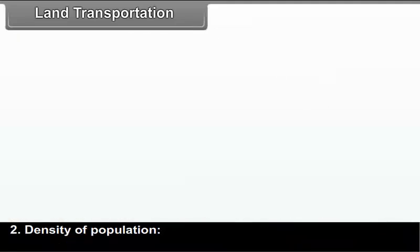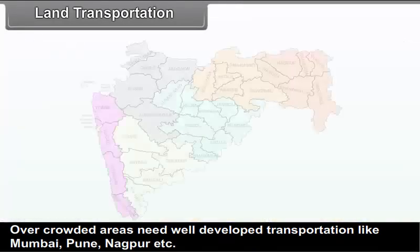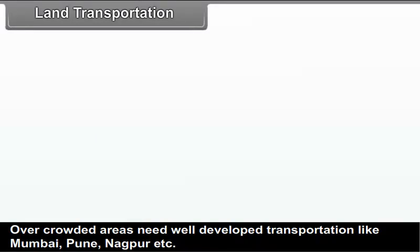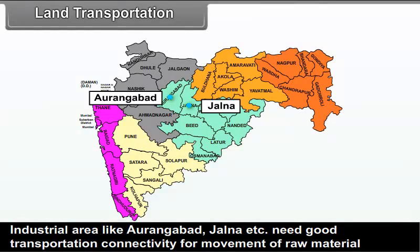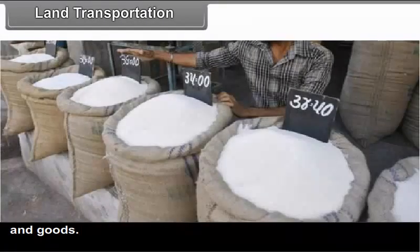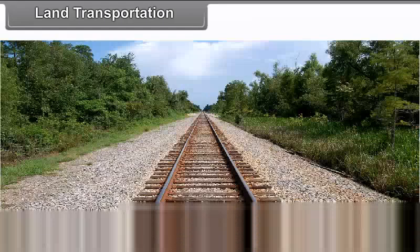Density of population is another factor — overcrowded areas need well-developed transportation, like Mumbai, Pune, and Nagpur. Industrial regions like Aurangabad and Jalna need good transportation connectivity for movement of raw material and goods. Land transportation is basically of two types: roads and railways.